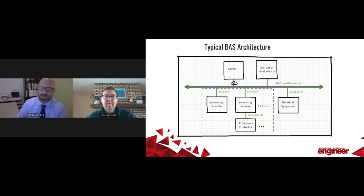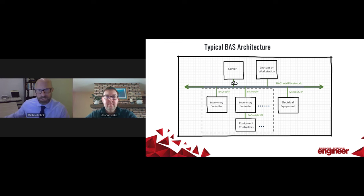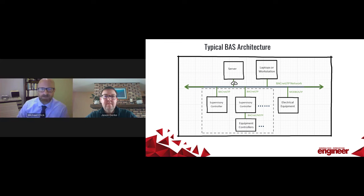The next slide shows something we see quite a bit in the industry, where you have one protocol bus with another protocol bus tied into it. You see the same application layers: the server application layer at the top with the server and workstations, and the supervisory controller layer below. A lot of times in our projects, we see electrical equipment tied into the BACnet bus through Modbus. So it's not uncommon to see two protocols operating one control system.